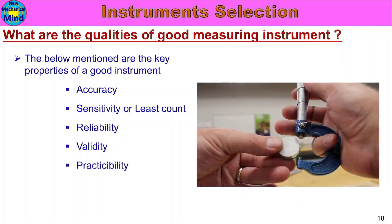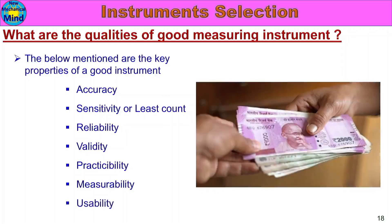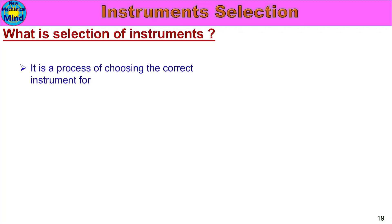Practicability means the instrument is easy to handle and measure with — it should not be complicated and must be user-friendly. Measurability means we can use the instrument to measure the required parameter. Usability means we can choose and select the right instrument for the job.